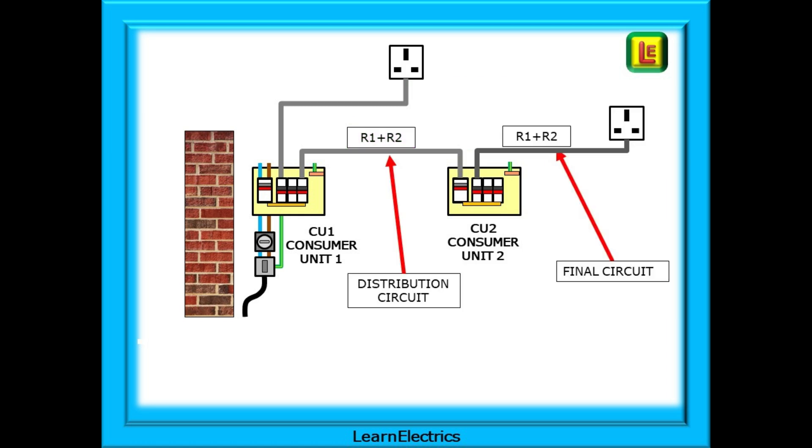Now let's add a new circuit to CU2. This is going to a point of use so it is a final circuit and it will have its own R1 plus R2 measurement. We need to enter this data onto the schedule of test results for CU2. But what about ZS? Where do we get the numbers from now? What do we write down?